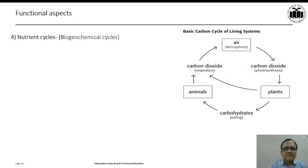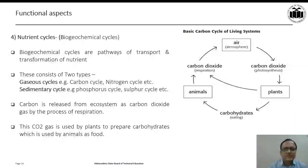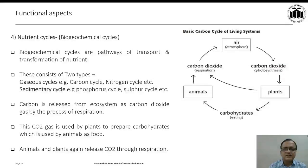The fourth functional aspect is regarding nutrient cycles which are also known as biogeochemical cycles. The biogeochemical cycles are pathways of transport and transformation of nutrients. These consist of two types. First one is gaseous cycles. The example can be given as carbon cycle, nitrogen cycle, oxygen cycle, etc. The second one is sedimentary cycle. The example is phosphorus cycle and sulfur cycle. Carbon is released from ecosystem as carbon dioxide gas by the process of respiration. This CO2 gas is used by plants to prepare carbohydrates which is used by animals as food. Animals and plants again release CO2 through respiration.